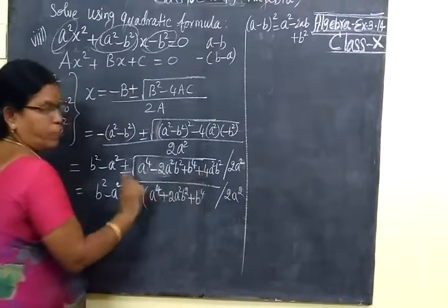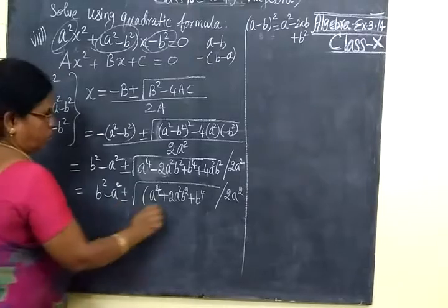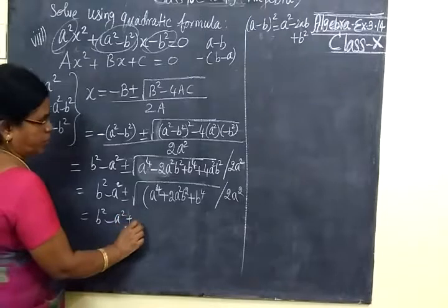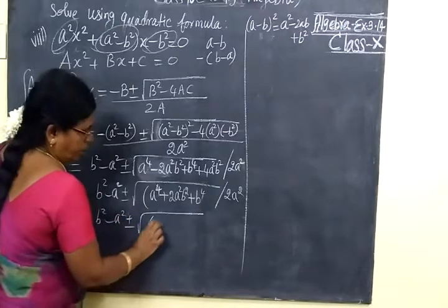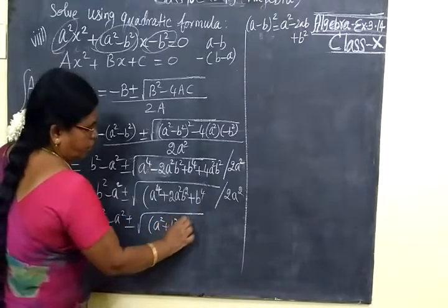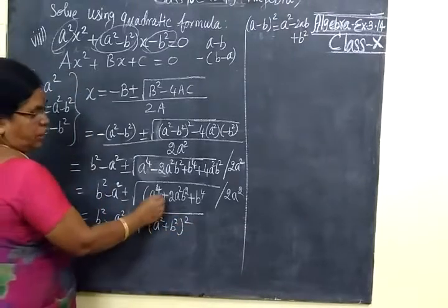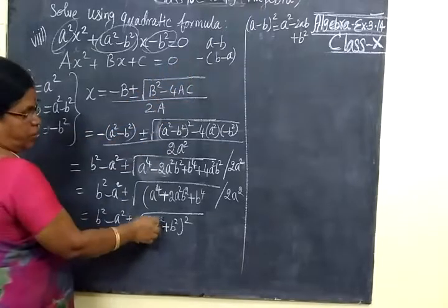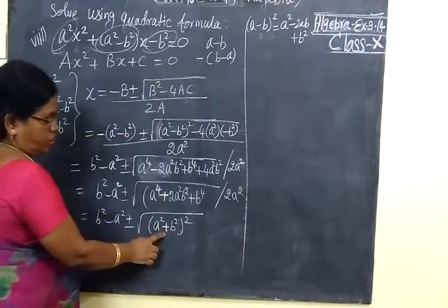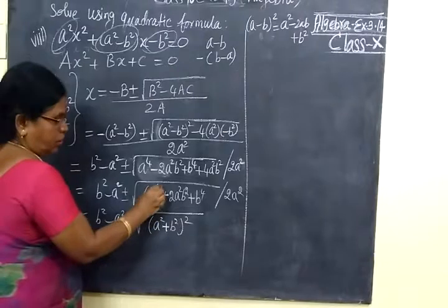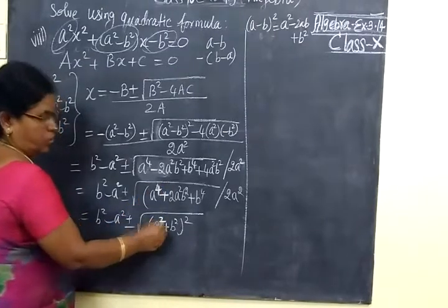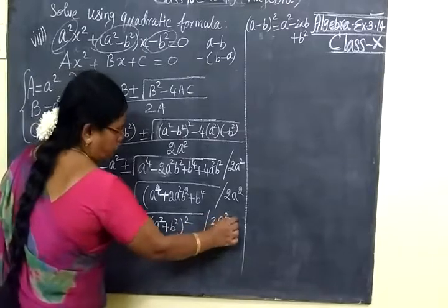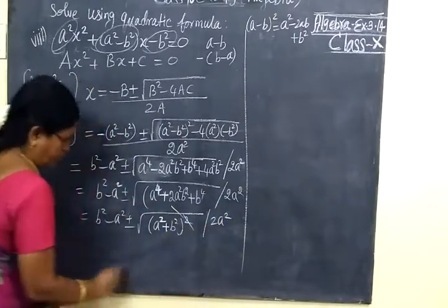Here -2 + 4 + 2 simplifies nicely. So we have A⁴ + 2A²B² + B⁴, which is nothing but (A² + B²)². Since it is a plus inside we use the plus formula. Since the power is 4, we write it as a square. The whole is divided by 2A², and the root and square cancel each other.